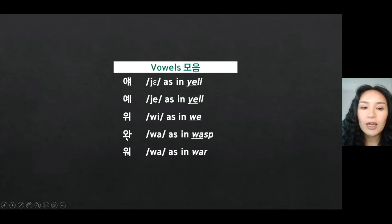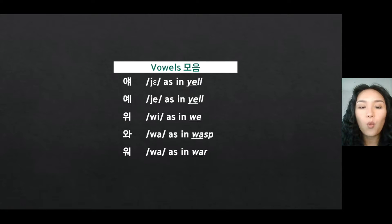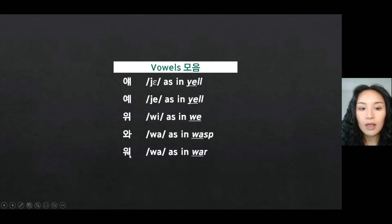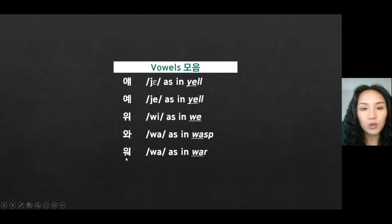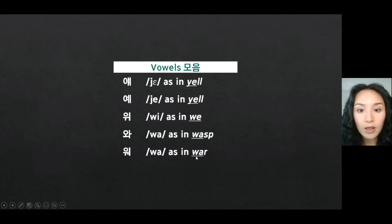The next one is a combination of O and A. So let's go faster: 와, 와, as in 'wasp.' The one after that is O plus O, so it goes 워, 워, as in 'war' — except for the final R sound.